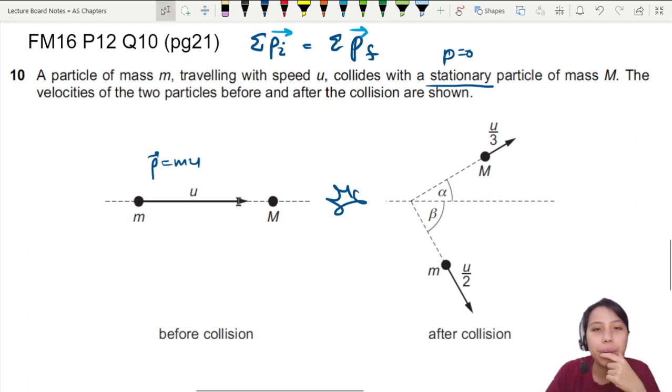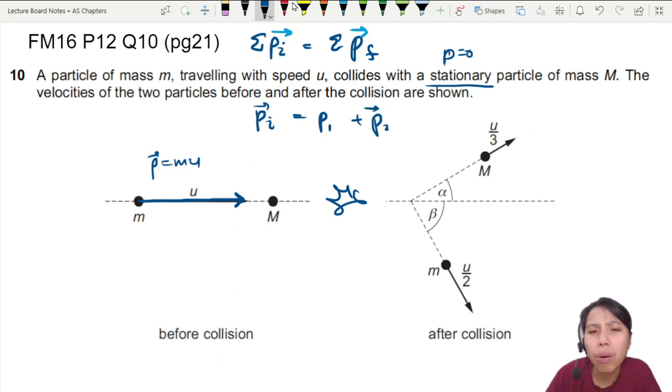So the very first thing you can do is think about the equation. Initial momentum, there's only one arrow here. Final momentum could be something along this line plus this line. So if I expand that equation, there's only one initial momentum. Initial momentum equals to the first one plus the second one, and these are all arrows.